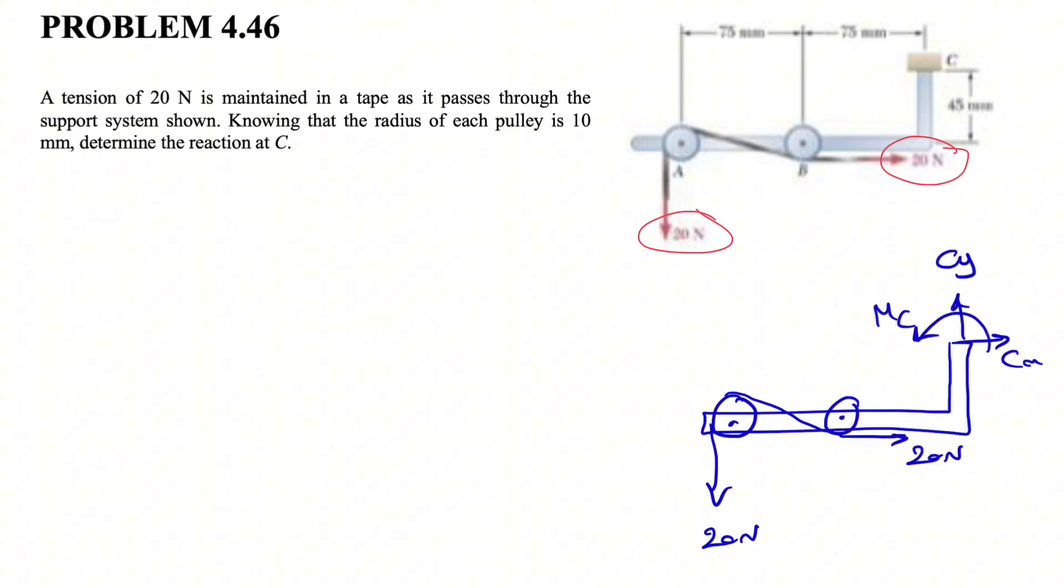Since we are in equilibrium, we can use our equilibrium equations, which are sum of all forces equals zero and sum of all moments equals zero. Now looking at the free body diagram, we see that if we go with the FX first, and this will be a positive direction for X, we have the 20 Newton force in X direction and we have CX.